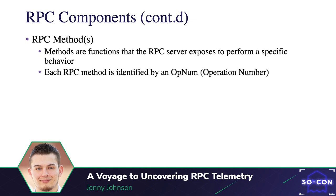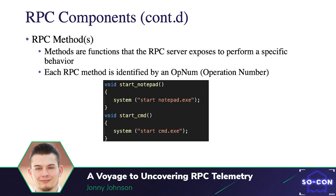Op nums are given to a method based on where they are defined inside the server code. For example, I created my own client and server RPC interface code to learn more about it. In that example, StartNotepad would be op num 0, and StartCmd would be op num 1.